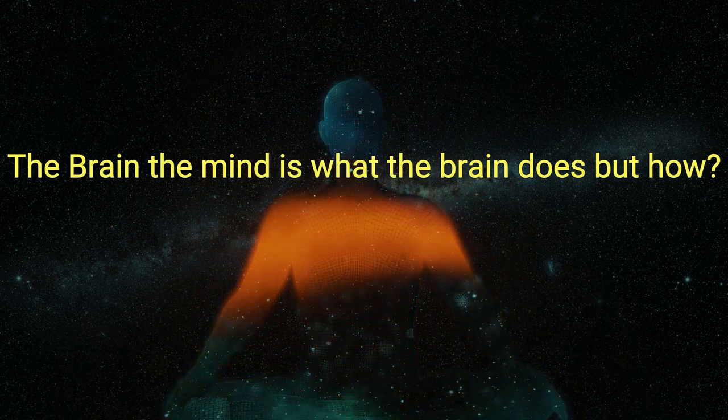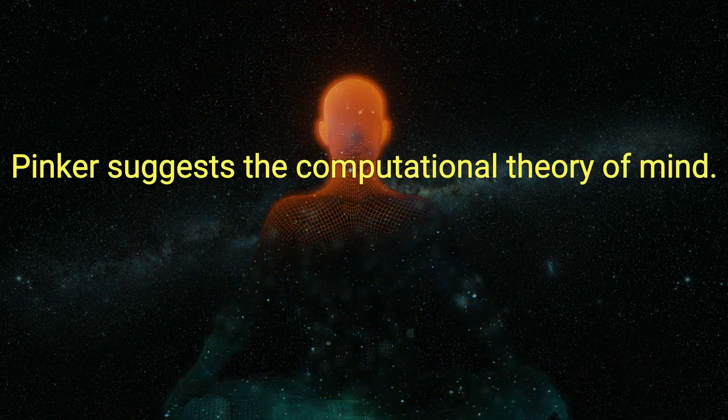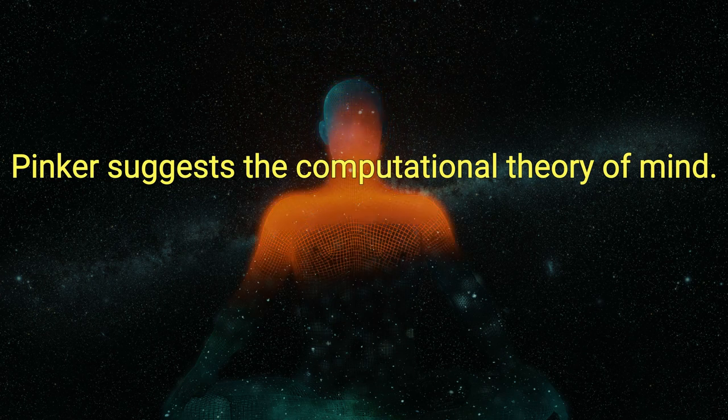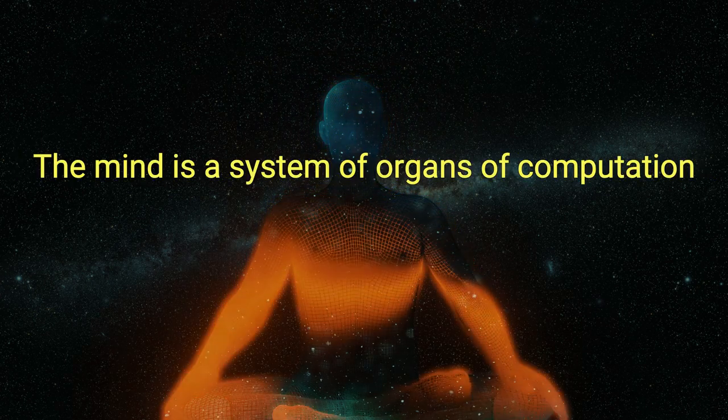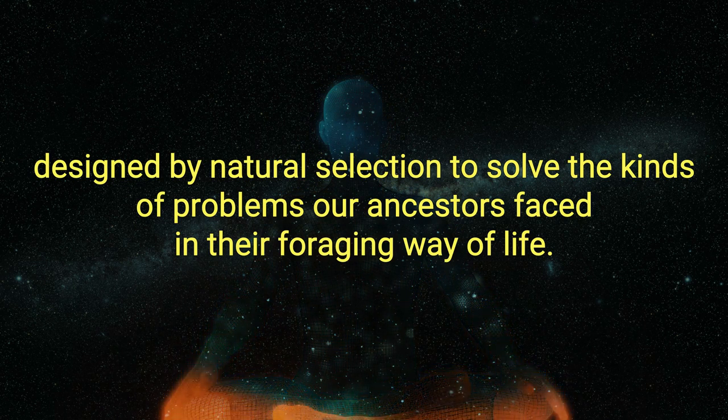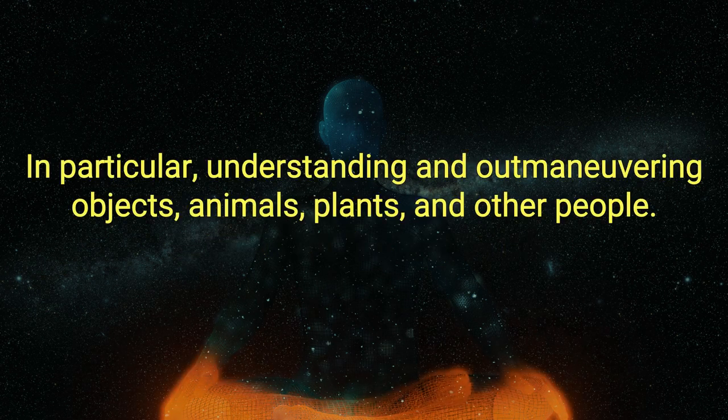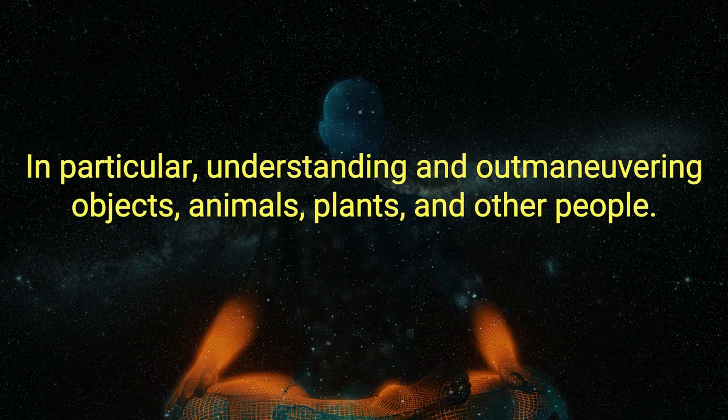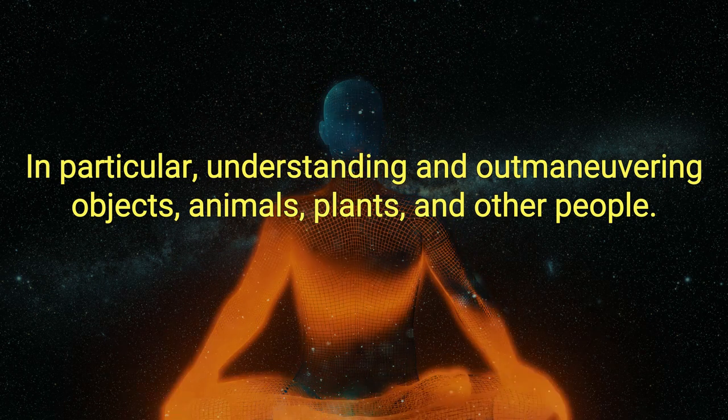The mind is what the brain does, but how? Pinker suggests the computational theory of mind. The mind is a system of organs of computation, designed by natural selection to solve the kinds of problems our ancestors faced in their foraging way of life, in particular, understanding and outmaneuvering objects, animals, plants, and other people.